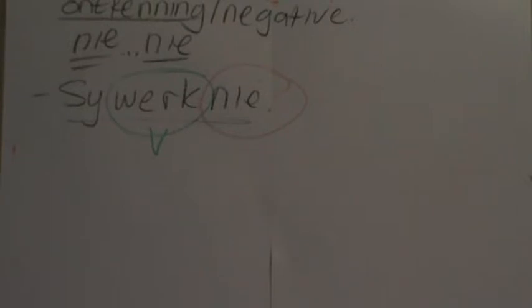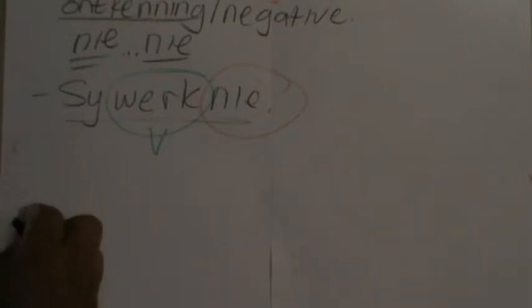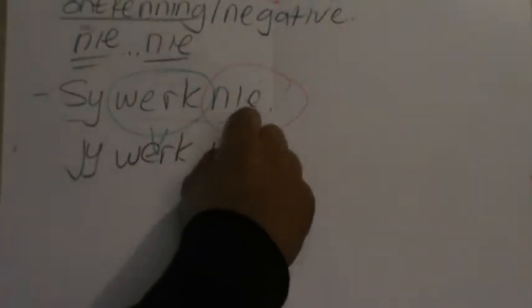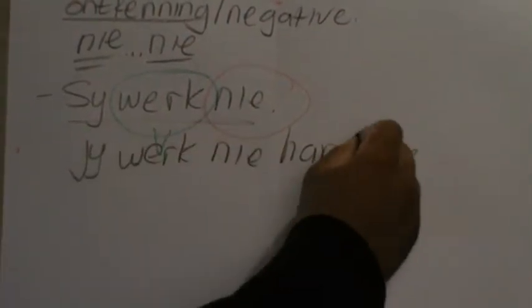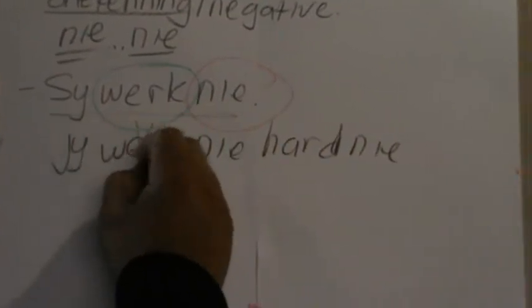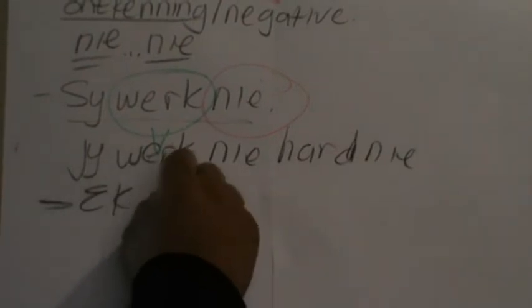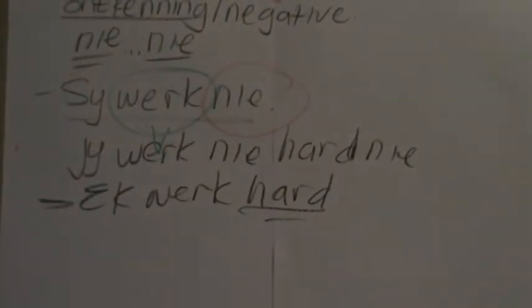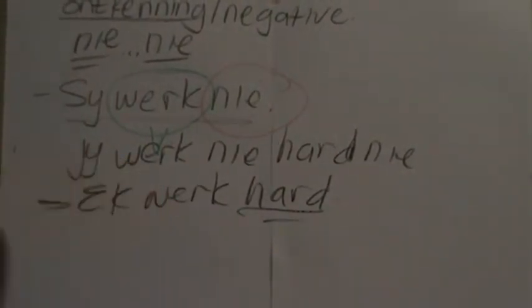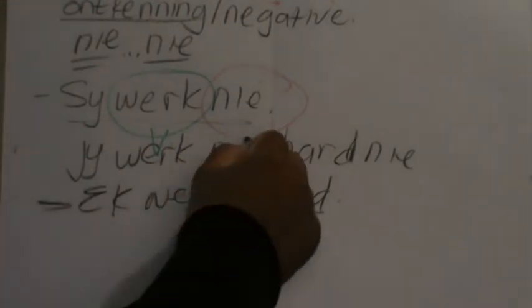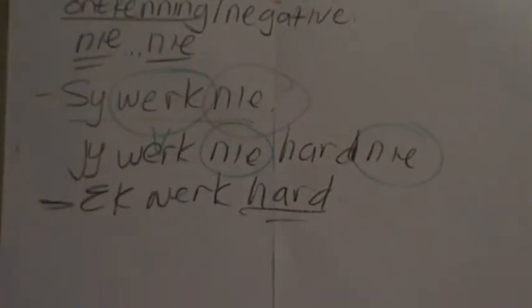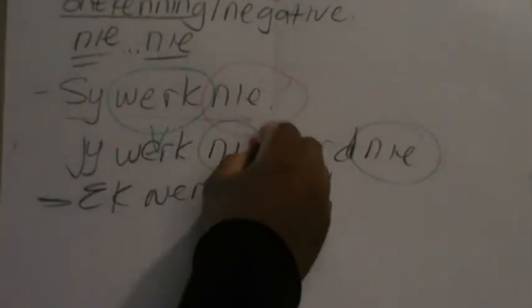So let's see in the longer sentences how we're going to sort this out. Let's put a longer sentence there where we use two nies in the negative. This sentence could be a reply where someone says 'ek werk hard' — I work hard — and then someone says, 'No, brother, you are not working hard.' Remember, there are always two nies in the longer sentences.